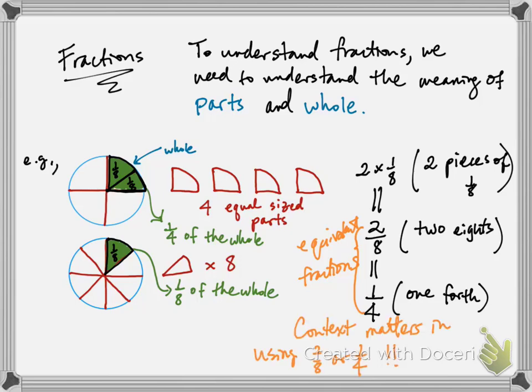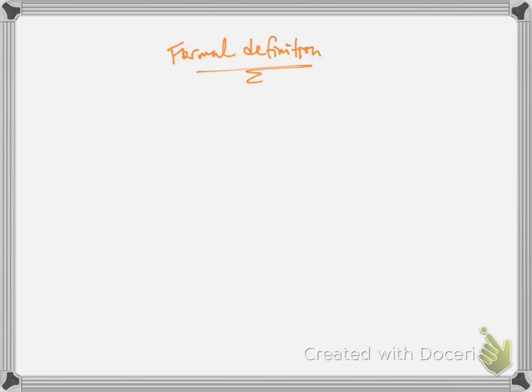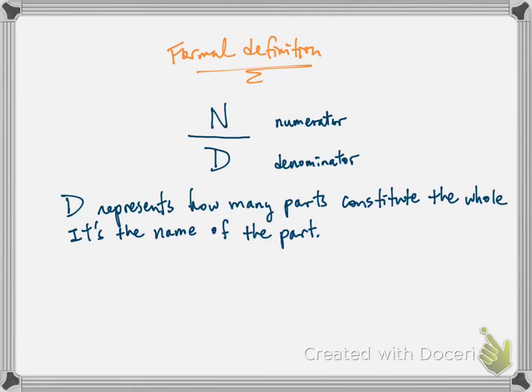In this simple example here, we talked about quite a few key concepts. Let's generalize these ideas into a formal definition of fraction. If we represent a fraction by its numerator and denominator with N and D, then D represents how many parts constitutes the whole. It's the name of the part. On the other hand, the numerator N represents the number of equal-sized parts.